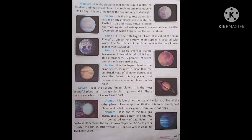Venus — Hindi mein Shukra kehte hain: It is the brightest and also the hottest planet. Venus is like the earth in size and mass. Venus is called the morning star when it appears in the east at dawn, and the evening star when it appears in the west at dusk.